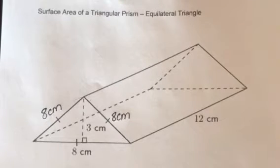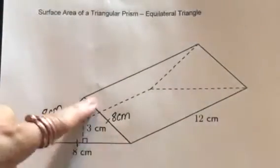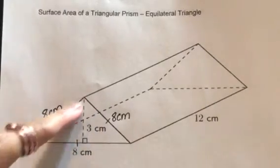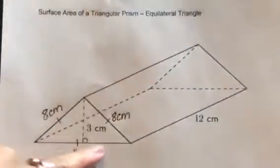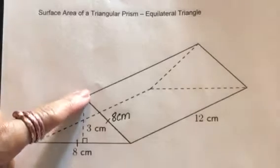We will be solving the surface area of a triangular prism, specifically an equilateral triangle. An equilateral triangle has all equal sides. As you can see, this triangle is 8 centimeters by 8 centimeters by 8 centimeters.